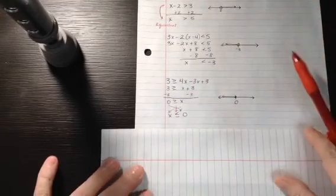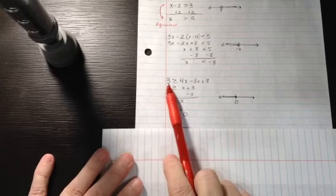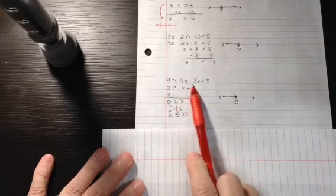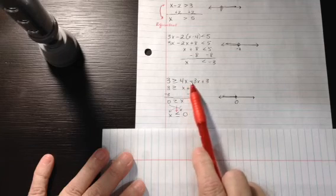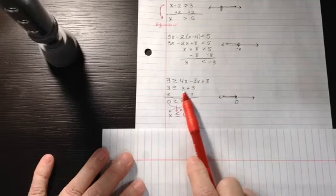Alright, here's one more. We have 3 is greater than or equal to 4x minus 3x plus 3. We're going to start by simplifying the right side. 4x minus 3x is 1x plus 3.